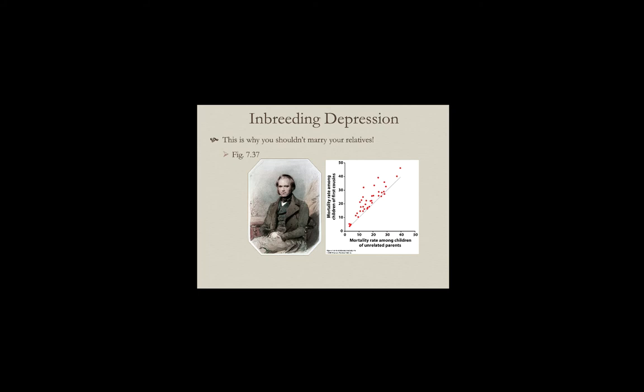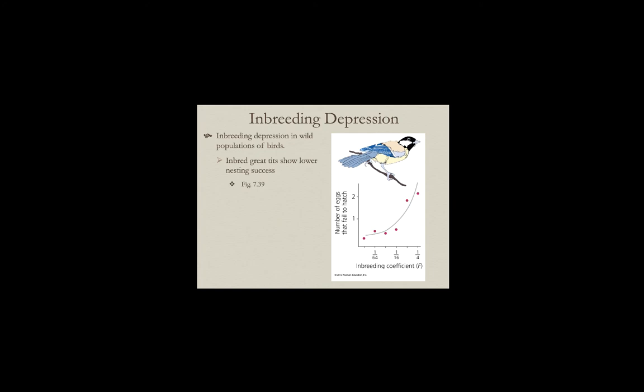Putting this into the context of conservation biology: conservation biologists often bring animals into captivity to increase the number of surviving individuals. But if you're going to have a captive breeding program or operate a zoo, it's very important to create some kind of artificial gene flow. Zoos will often ship sperm from unrelated individuals to females in one zoo to prevent inbreeding.